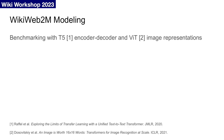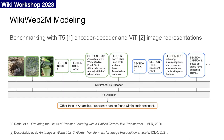We model all of our tasks with the same T5 encoder-decoder framework and use ViT to embed our input images. Here, we illustrate what our model pipeline looks like with data from our section summarization task. In green, we have images and the target section highlighted, and in blue, we have inputs from other sections of the webpage. Images are encoded with ViT and fed into our T5 encoder with the other embedded text tokens. Then the decoder attempts to generate a meaningful summary.